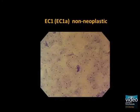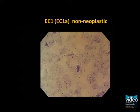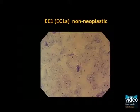In the typical image of EC1, rhomboidal-shape squamous cells with compact nuclei are observed. This is a characteristic image for the non-neoplastic region.